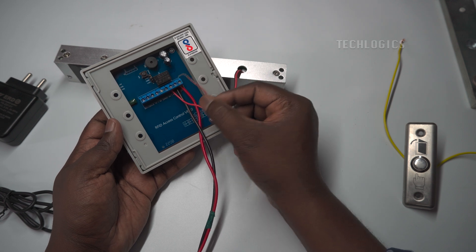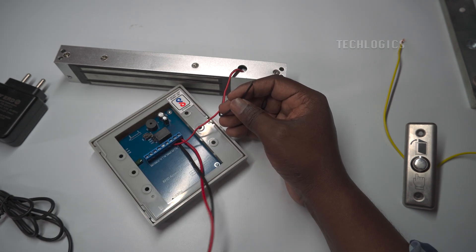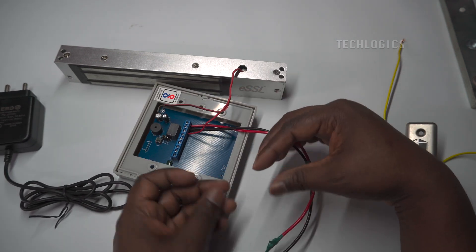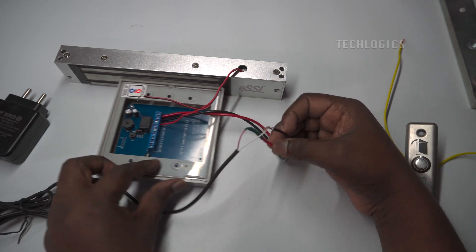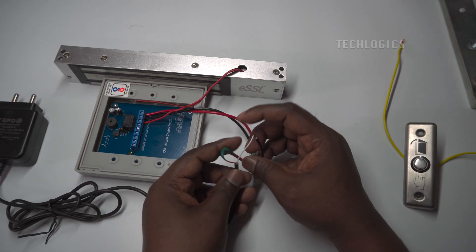Next, connect the electromagnetic lock's negative terminal to the DC power adapter's GND or negative supply wire. This will complete the circuit for the electromagnetic lock.